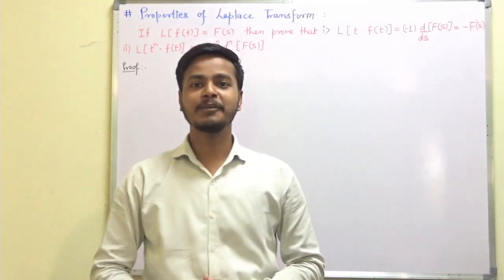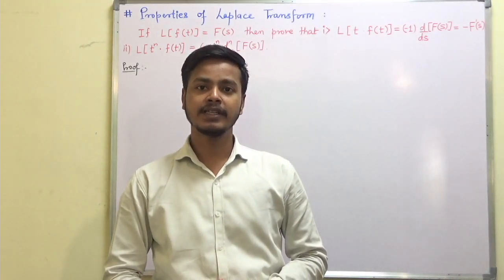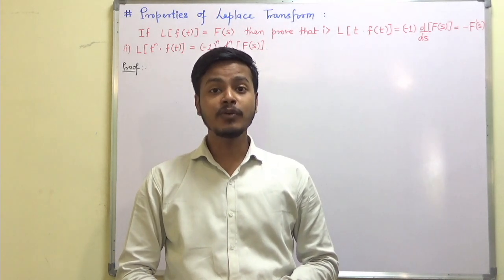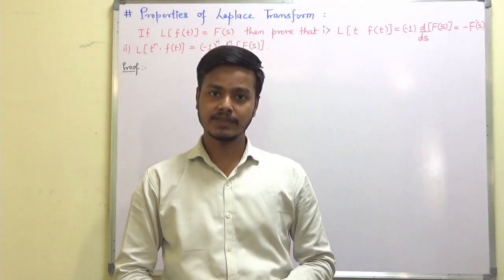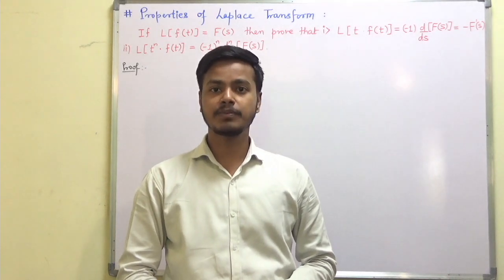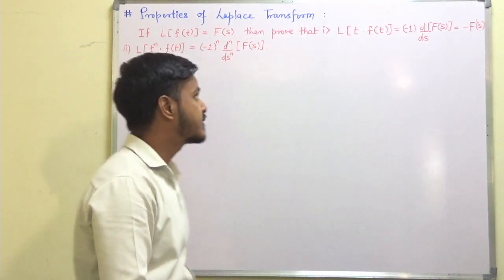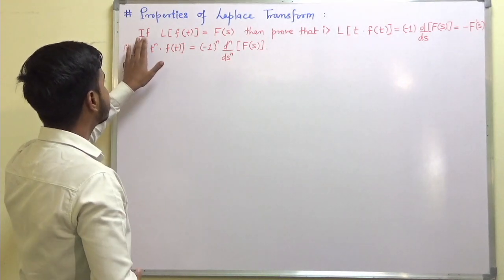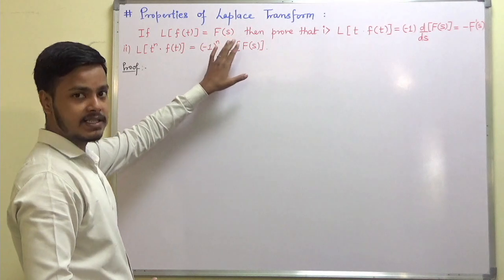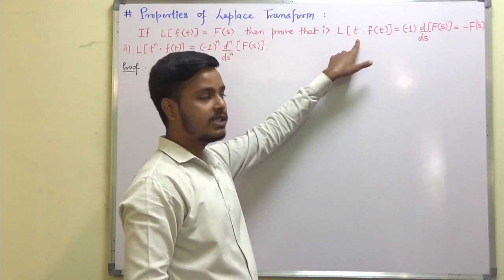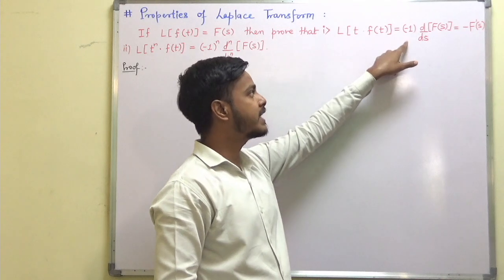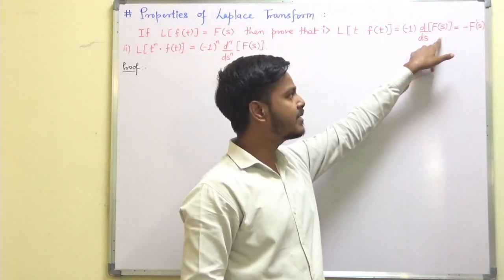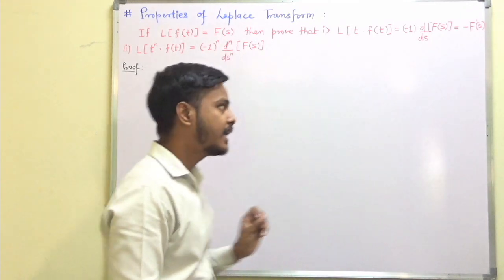Hello and welcome to this learning video. We are going to discuss the fourth property of Laplace transform. This property says: if the Laplace transform of f(t) is F(s), then prove that the Laplace transform of t·f(t) is minus d/ds of F(s), which is the same as minus F'(s).